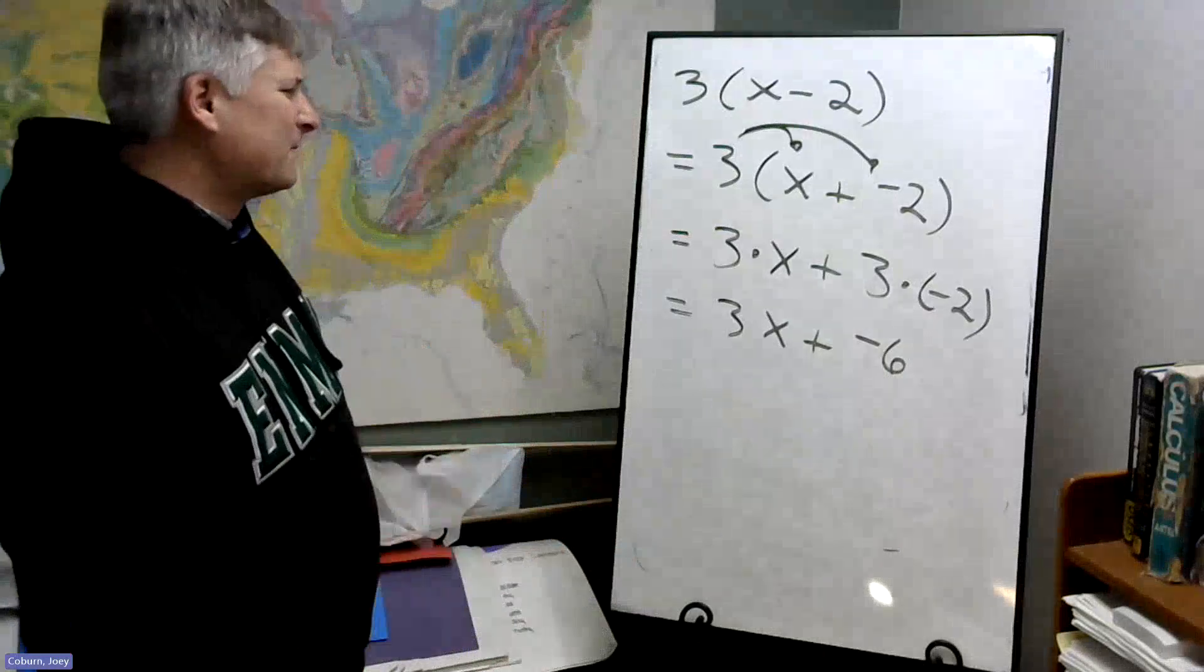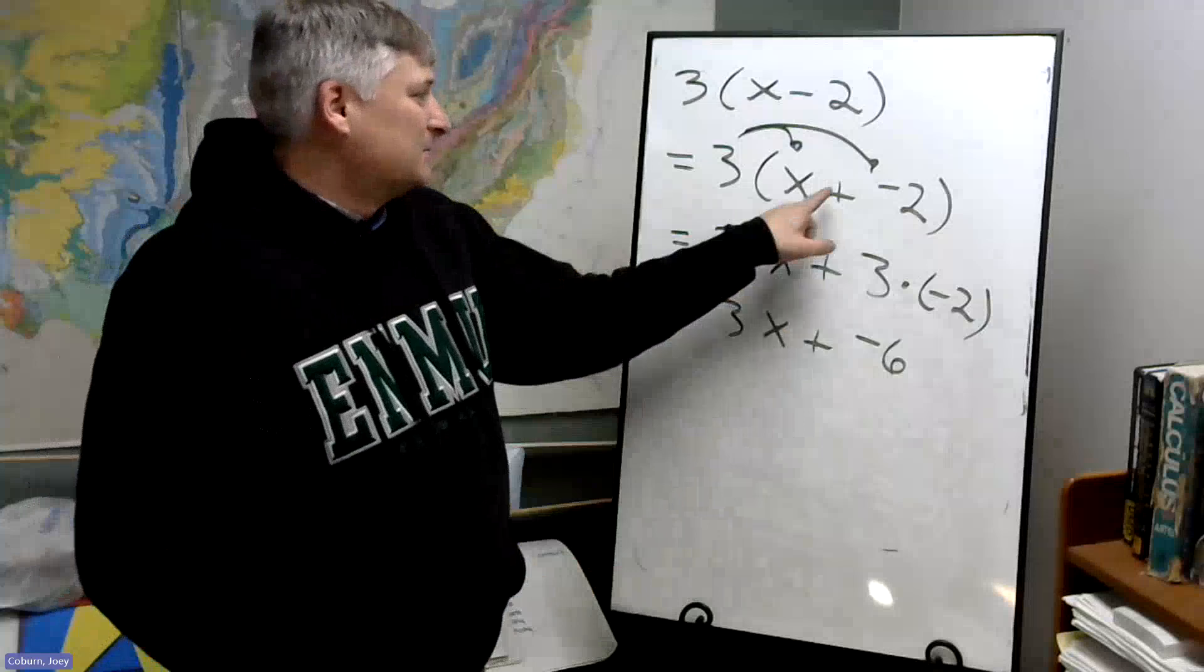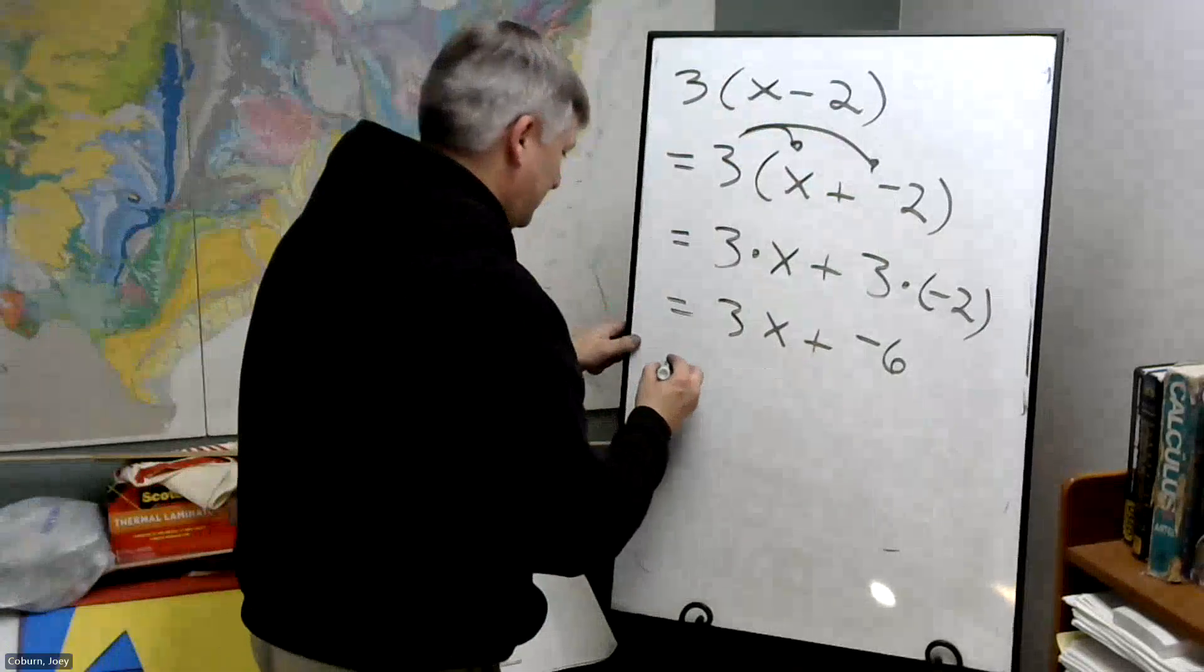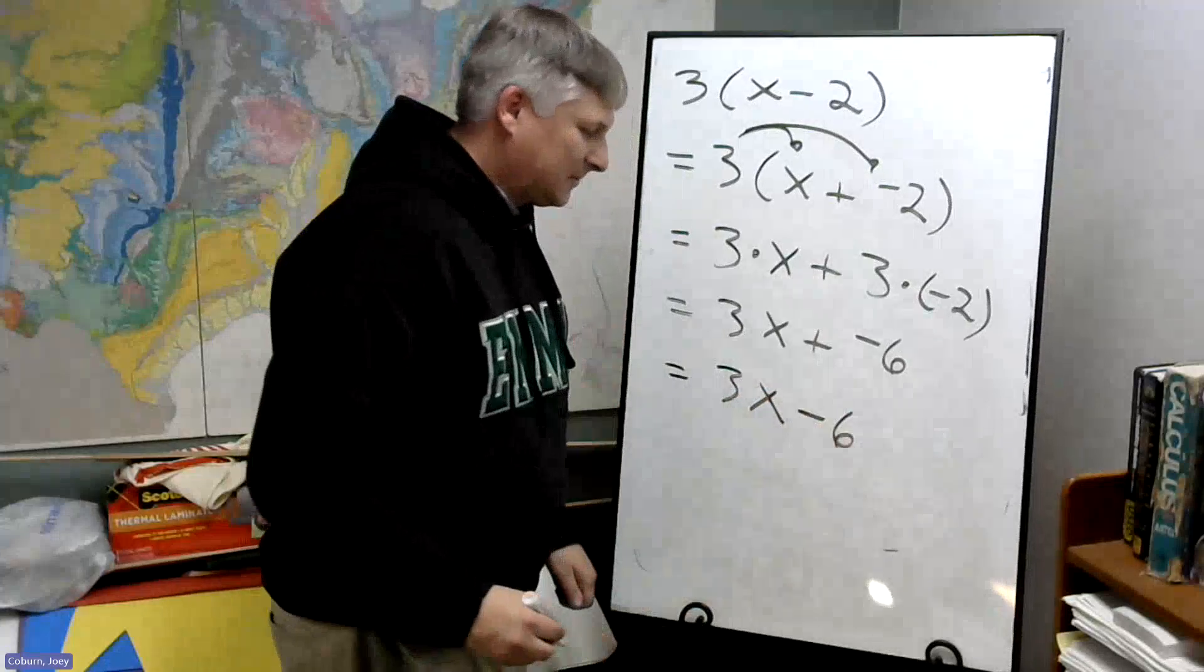We're adding a negative. Adding a negative is the same as subtracting. So adding this negative is the same as subtracting. Well, we'll call this minus 6.